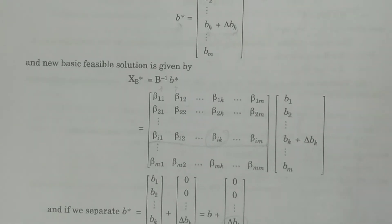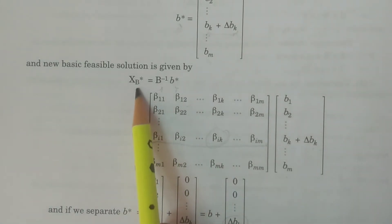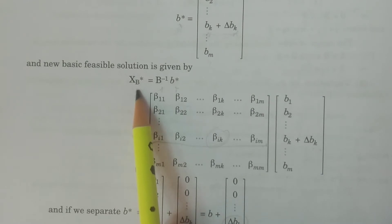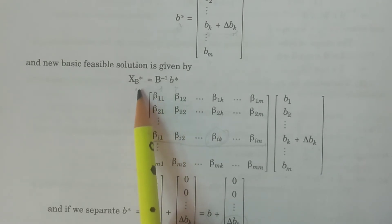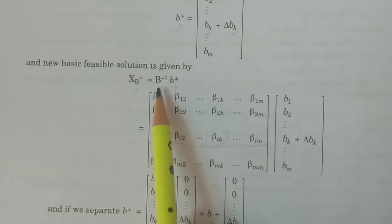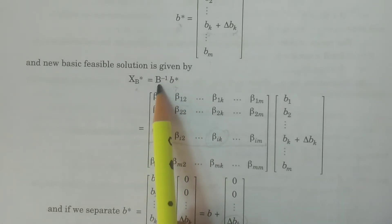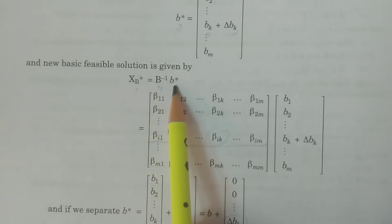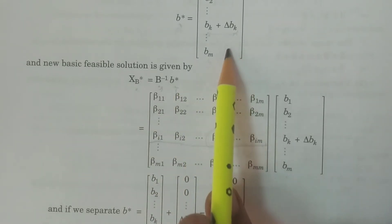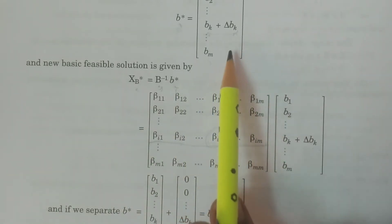Let XB star be the new feasible solution. It is going to be considered as the basic feasible solution, and XB star is equal to B⁻¹ times B star, where capital B is nothing but the basis matrix (or unit matrix). B⁻¹ will be the same, and B star (small v star) is nothing but the new right-hand side constant vector.